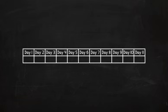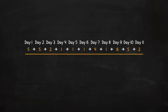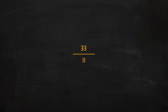Suppose you read your math book on 11 different days, and this chart shows the number of pages that you read each day. To find the average number of pages that you read each day, you would add them up and divide by 11, because there are 11 days. 5 plus 5 plus 2 plus 1 plus 1 plus 1 plus 4 plus 1 plus 6 plus 5 plus 2 equals 33. 33 divided by 11 is 3.